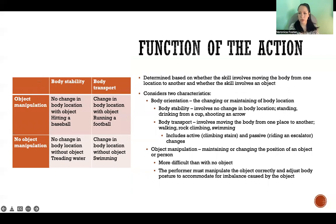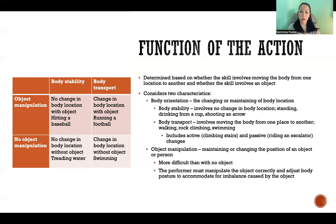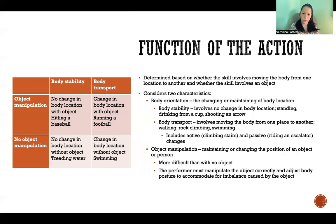The next characteristic is function of the action, determined by whether the skill involves moving the body from one location to another and whether the skill involves an object. The first sub-characteristic is body orientation: changing or maintaining location. There is either stability — no change in body location — or transport, meaning the body moves from one place to another. If there is no change in location, that could be like standing and doing an action in place, such as shooting an arrow.